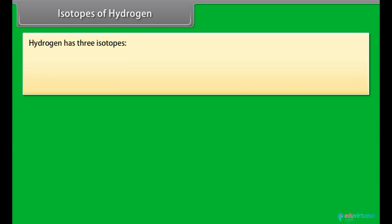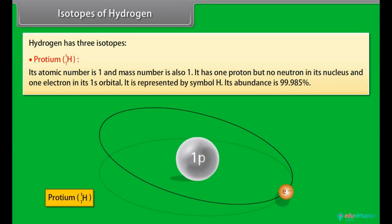Isotopes of Hydrogen: Hydrogen has three isotopes. Proteum - Its atomic number is 1 and mass number is also 1. It has one proton but no neutron in its nucleus and one electron in its 1s orbital. It is represented by symbol H.